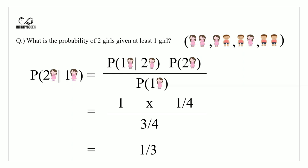We need to calculate the probability of two girls given one girl equals the probability of one girl given two girls times the probability of two girls divided by the probability of one girl.